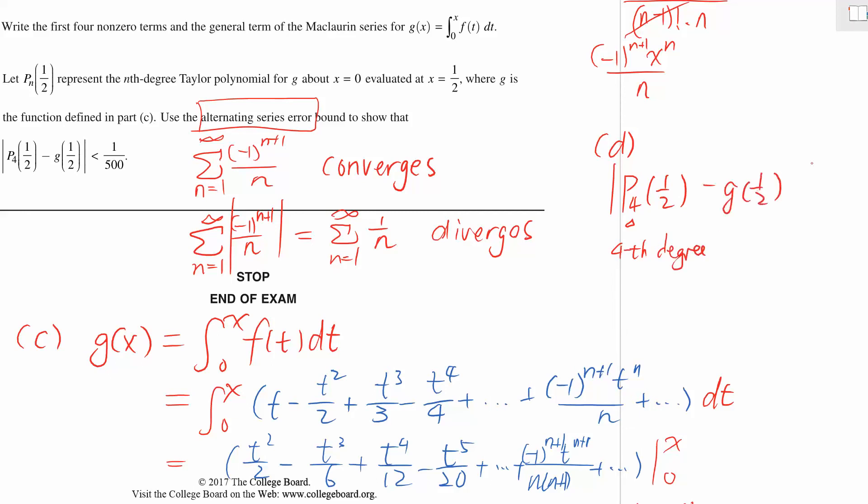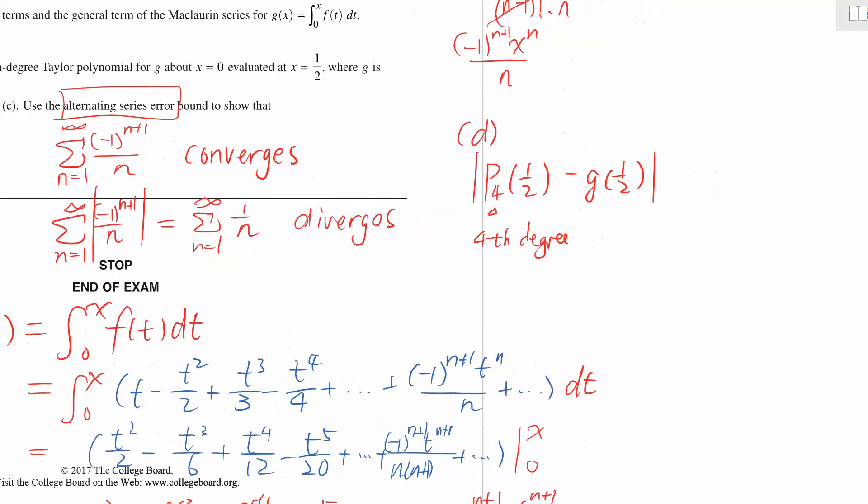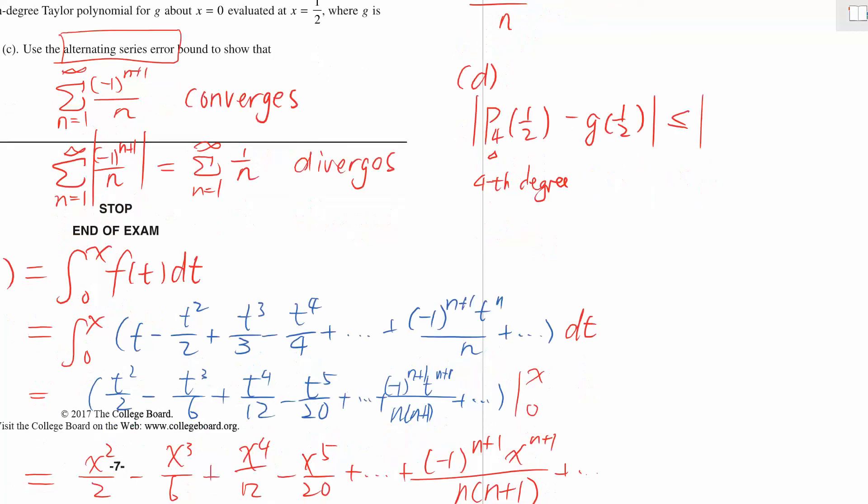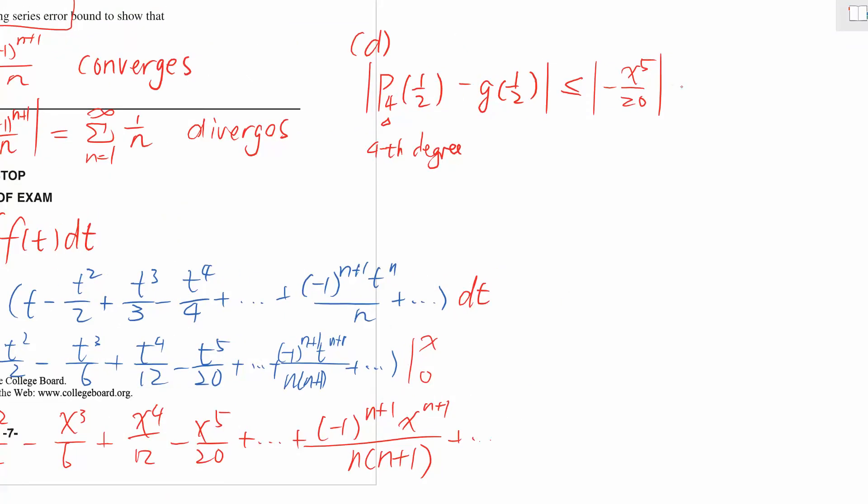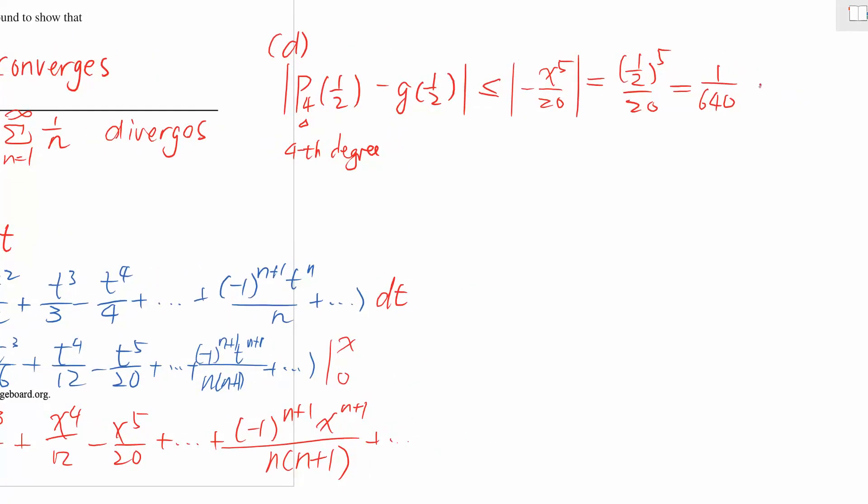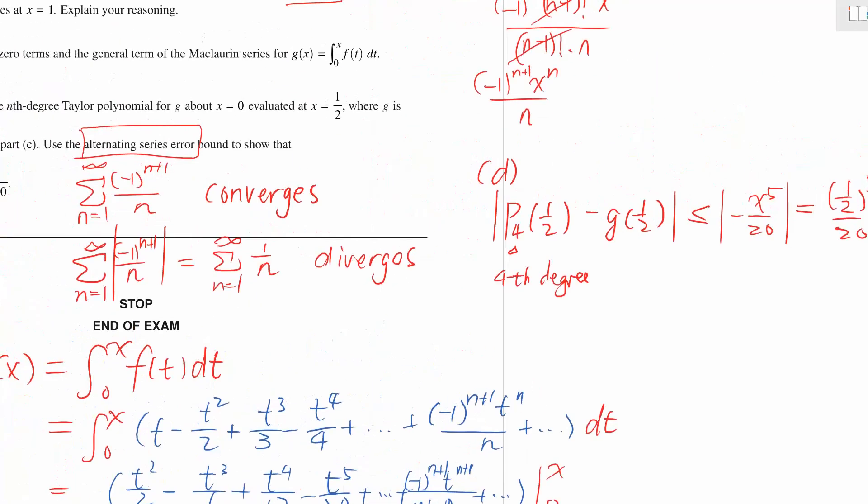And g(1/2), which is the real value of the whole series. For alternating series error bound, we know that this error is less than or equal to the absolute value of the next term. For the next term we have the fifth degree term, which is -x^5 over 20. Then we can evaluate it at (1/2)^5 over 20, which comes out to be 1 over 640, which is less than 1/500, and we are done.